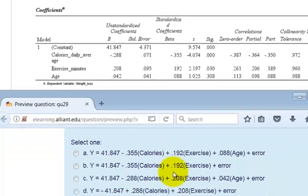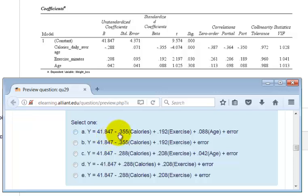So the correct answer would be not the first one, right? Because they use beta weights here. You do not use beta weights in the actual formula. You use the unstandardized B weights.